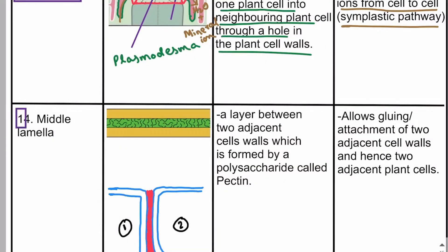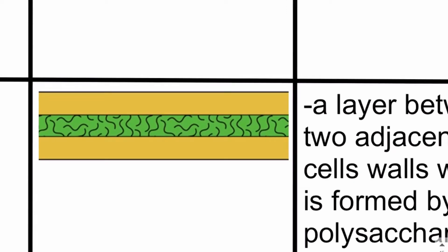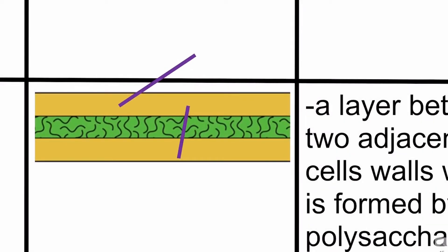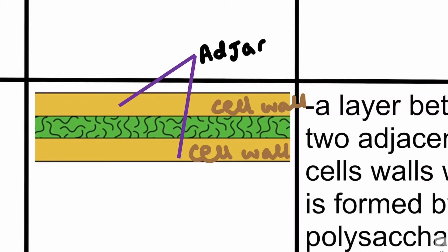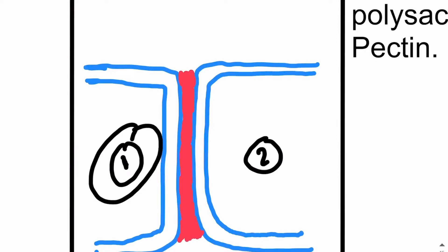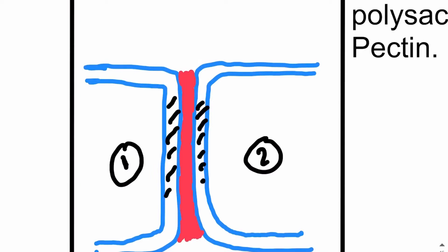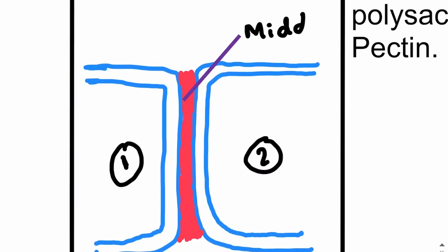Moving on to the middle lamella. The middle lamella is a layer between adjacent cell walls. Here we can see one cell wall and another cell wall — these are the cell walls of neighboring plant cells, the adjacent cell walls of two plant cells joined together. There is plant cell number one and plant cell number two, and the layer between these two adjacent cell walls is known as the middle lamella.